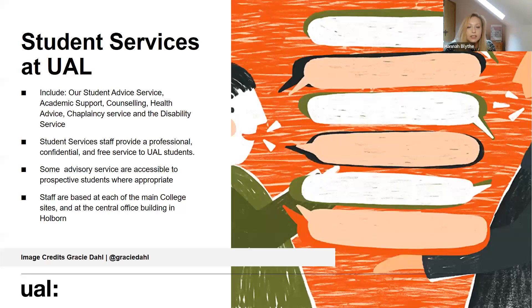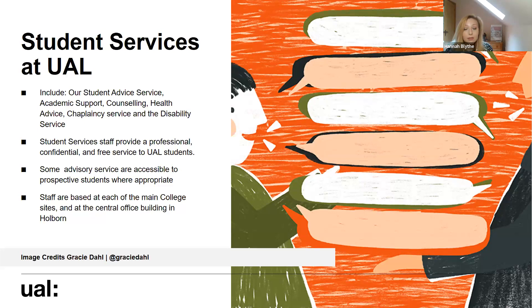Student support services at the college and university include a student advice service, academic support, counselling, health advice, chaplaincy, and a disability service — all provided completely free of charge and confidentially for all students. Some of those services you can tap into before you actually join us. If you're thinking about how to finance your studies you can speak to a financial advisor about student loans, bursaries, and grants. Or if you're an international student needing a visa, we have immigration specialists who can support you with that process.